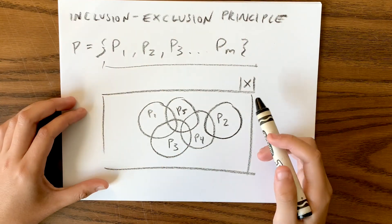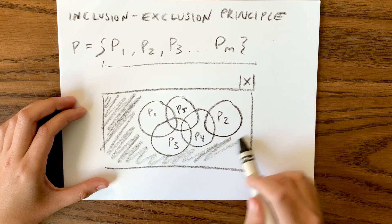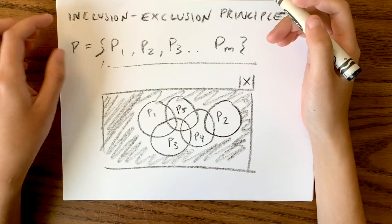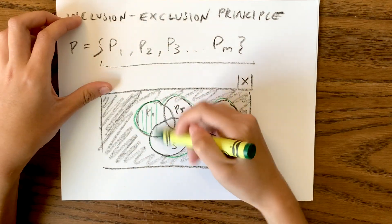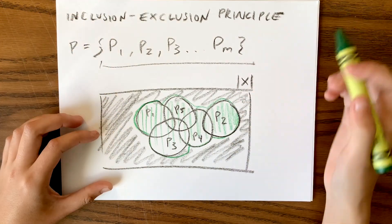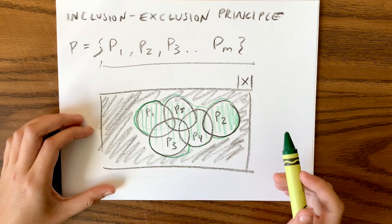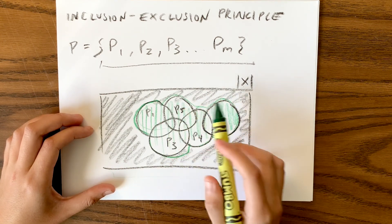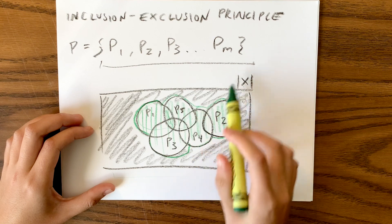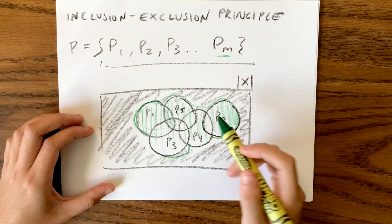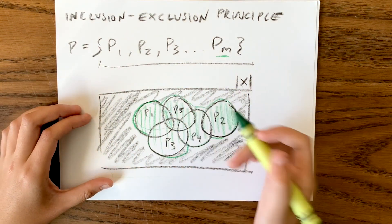What we want is everything outside of all these properties. With inclusion-exclusion, we first include all the properties to find their value within the sample space, then we exclude that from the total. The challenge is the weird intersections — if you take out property one and then property two, you're overlapping and double counting. For some number M of properties, you might have a ton of different intersections, so how do you account for not double counting when you subtract those intersections?